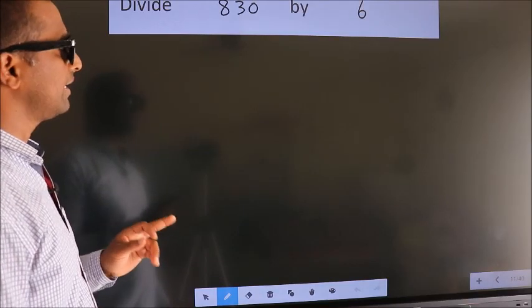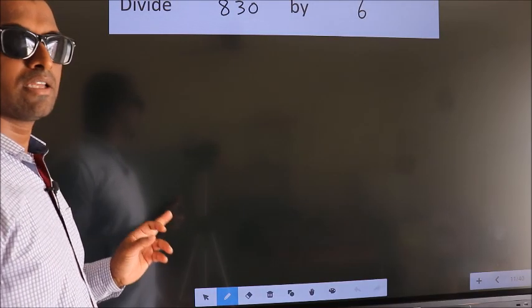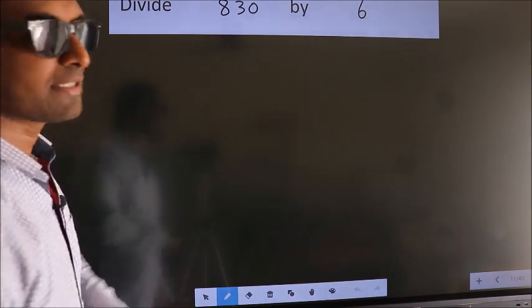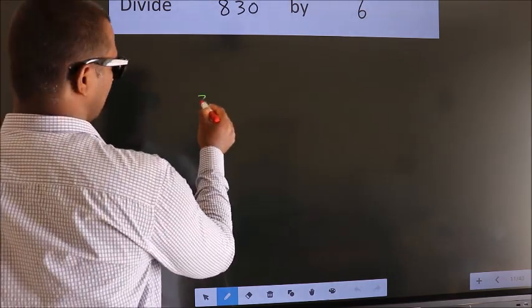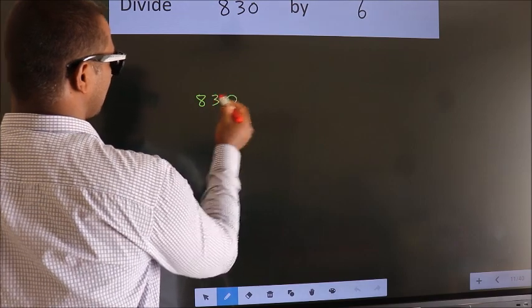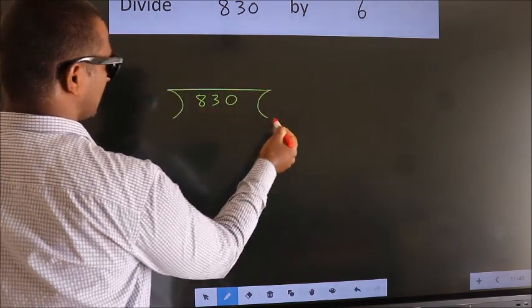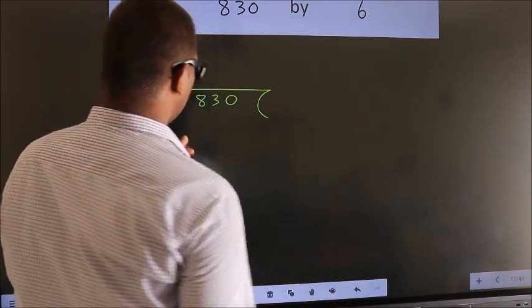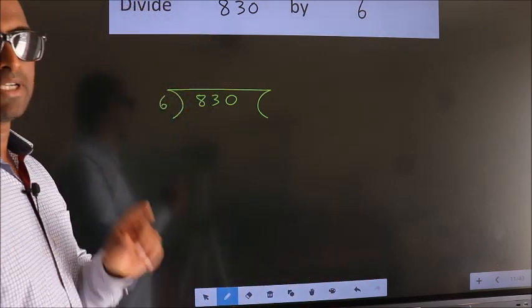Divide 830 by 6. To do this division, we should frame it in this way: 830 here, 6 here. This is your step 1.